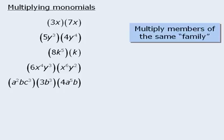Beginning with the first example, when we multiply the constants 3 and 7, we get 21, and when we multiply x by x, we get x squared.